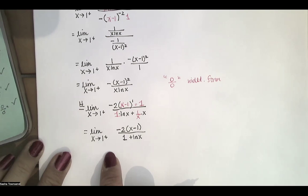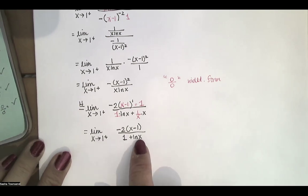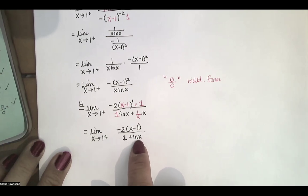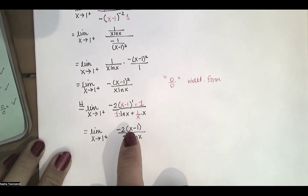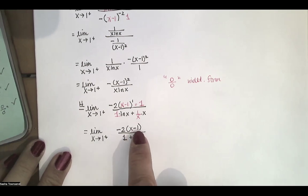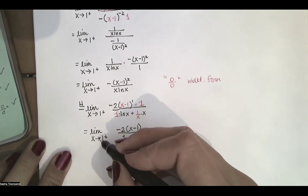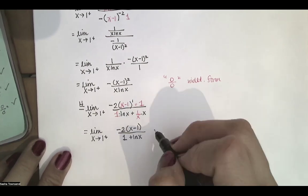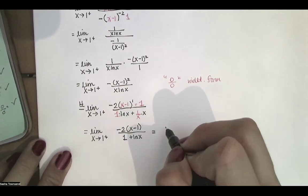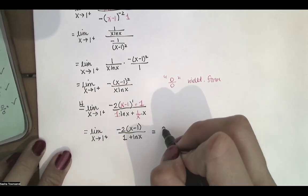Simplifying, we get the limit as x approaches 1 from the right of negative 2 times the quantity x minus 1, all divided by 1 over x times x, which is 1, plus natural log of x. As x approaches 1 from the right, natural log of 1 is 0, so we have 0 plus 1, which is 1 in the denominator, and the numerator is approaching 0. So we get 0 divided by 1. Since this function is continuous at 1, we plug in and get 0.